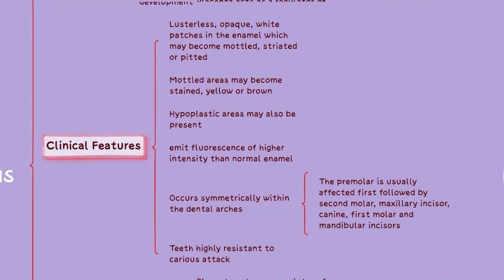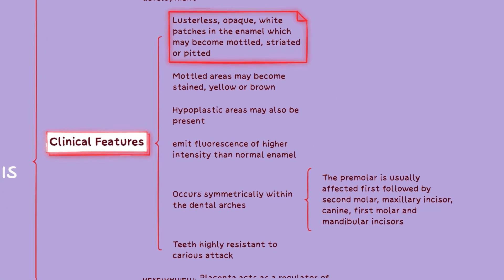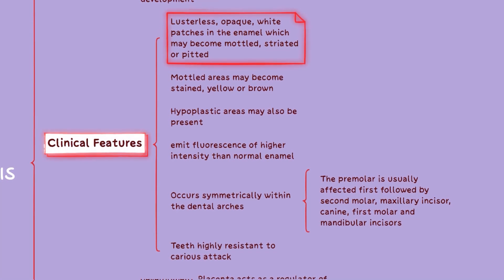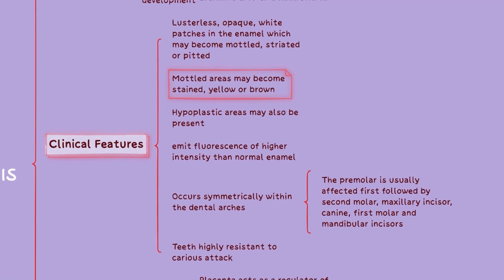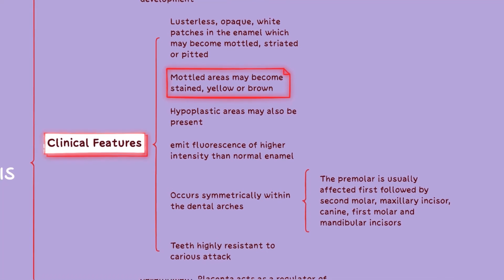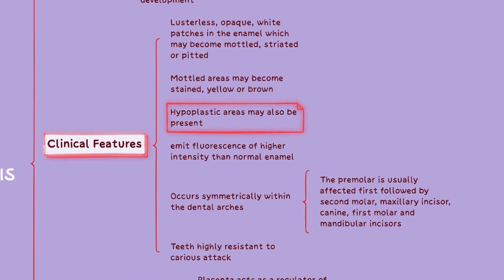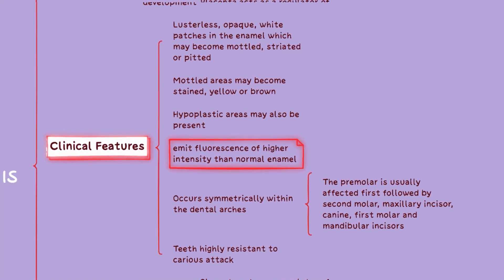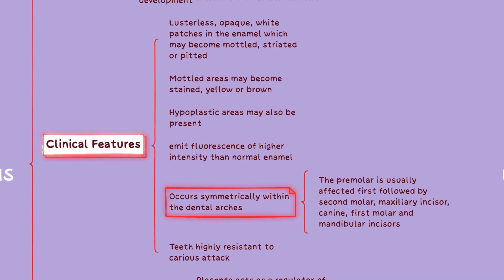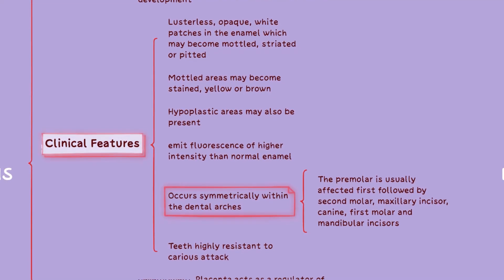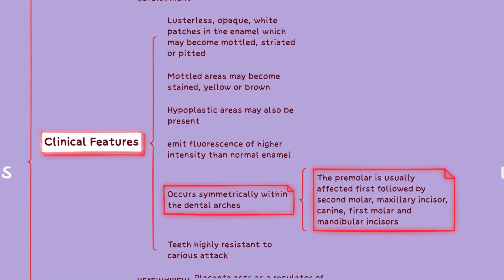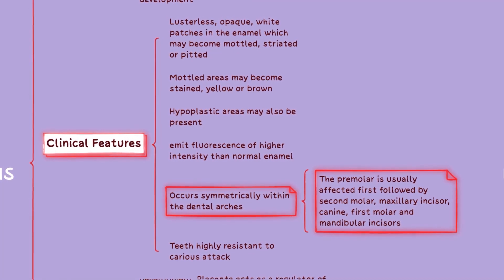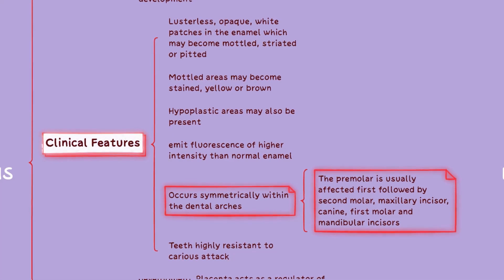Enamel fluorosis results in various clinical features including lustreless opaque white patches in the enamel, which may become mottled, striated, or pitted. Mottled areas can also become stained yellow or brown. Hypoplastic areas may be present, and the enamel may emit fluorescence of higher intensity than normal enamel. Enamel fluorosis occurs symmetrically within the dental arches, with the premolar usually being the first tooth affected, followed by the second molar, maxillary incisor, canine, first molar, and mandibular incisors.